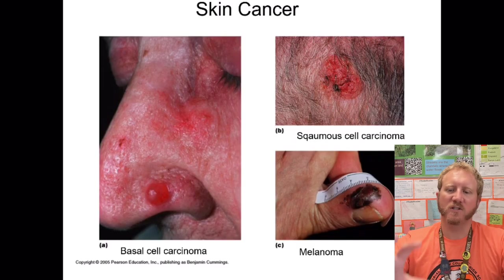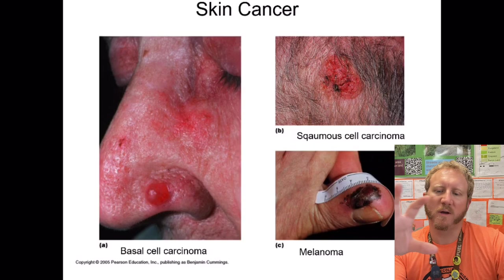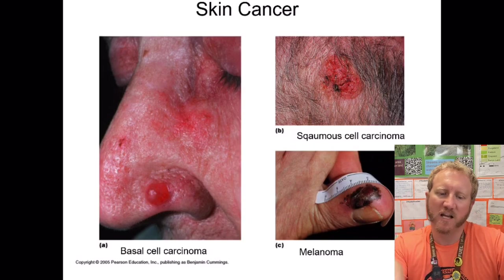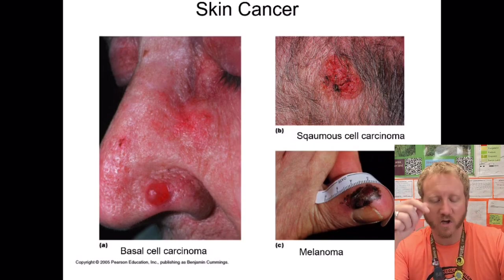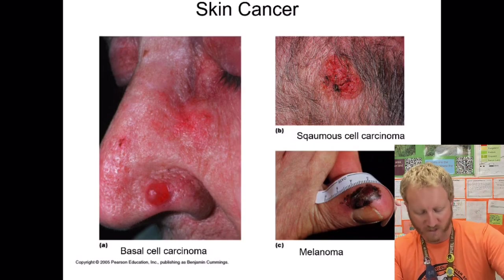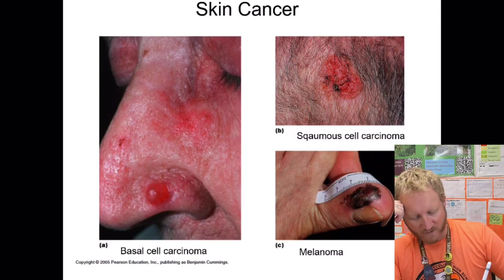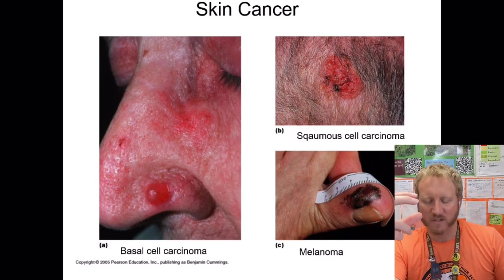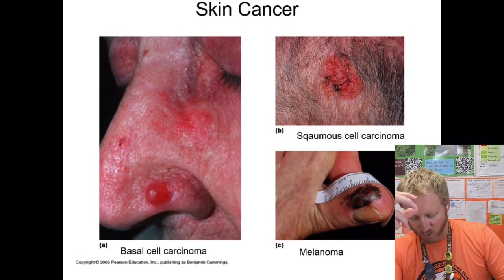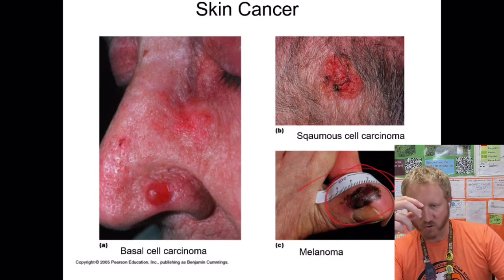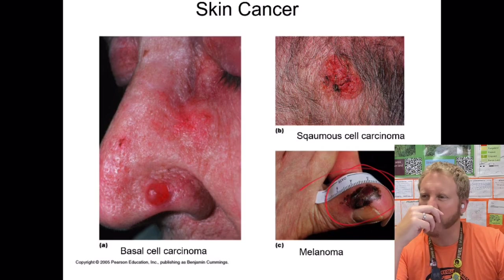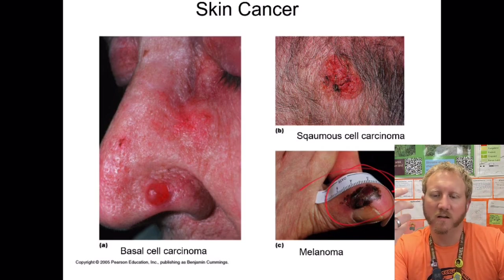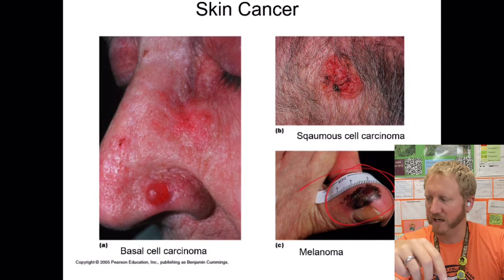Different types of skin cancer look very different depending on which cell type is affected. Melanoma appears as a dark spot because melanocytes are growing uncontrollably, increasing melanin production in that area. That basically covers the skin unit.